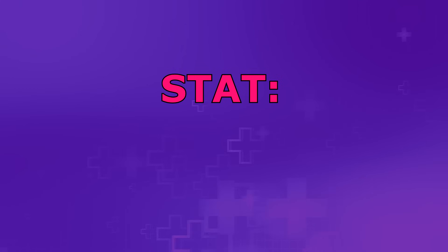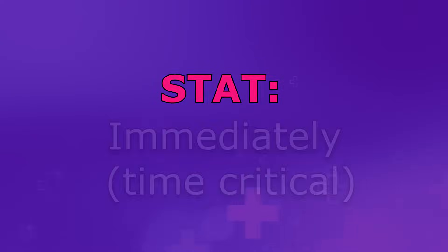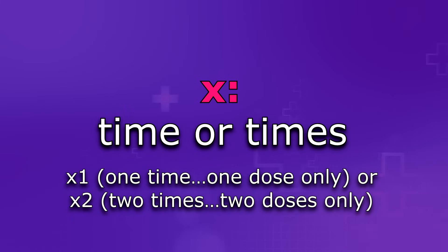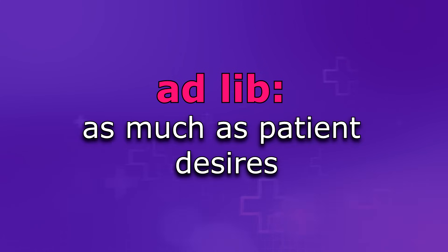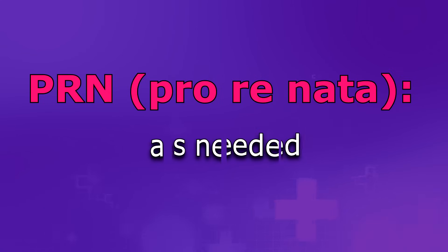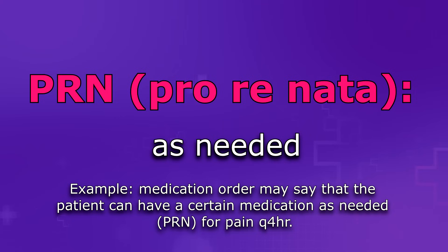Let's look at some miscellaneous frequency abbreviations. STAT (S-T-A-T) means immediately — it is time critical. Then we have the letter X, which means time or times. For example, X1 means one time or one dose only — such as an order for morphine IV 2 mg times one dose. There is also ad lib, meaning as much as the patient desires, often seen with orders to ambulate. And lastly, PRN means as needed, commonly seen with medication orders — for example, a patient may receive a medication PRN as needed for pain, Q4H, meaning every four hours.